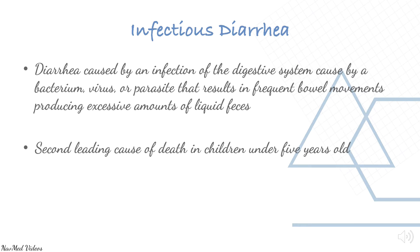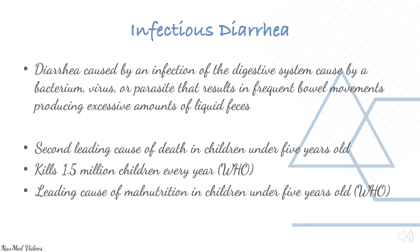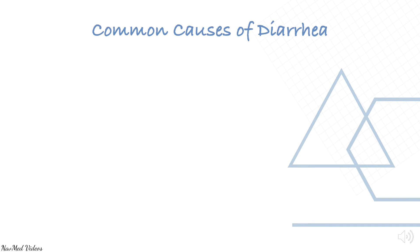Infectious diarrhea kills approximately 1.5 million children every year and is the leading cause of malnutrition in children under five. Overall, it kills five to ten million people per year. Let's have a look at common causes of diarrhea.